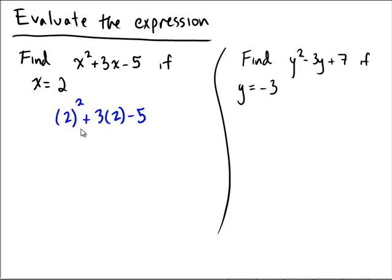So what is order of operations going to tell us now? 2 squared would be 4. 3 times 2 would be 6 minus 5. 4 plus 6 is, of course, 10 minus 5. And so the final answer to the left problem would be the number 5.